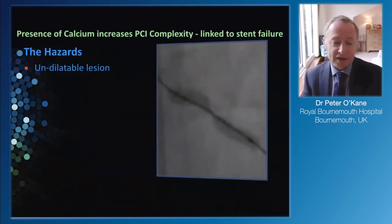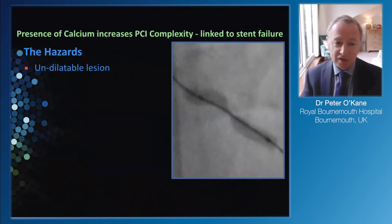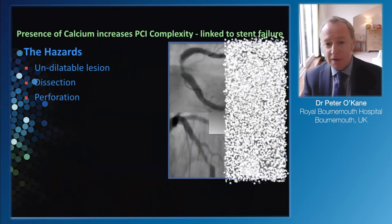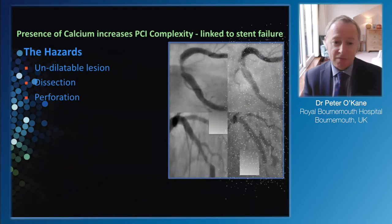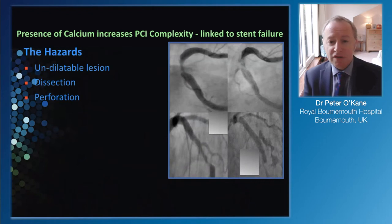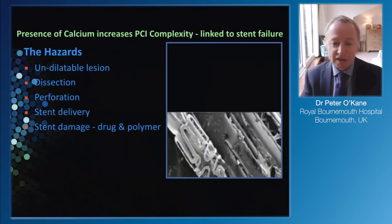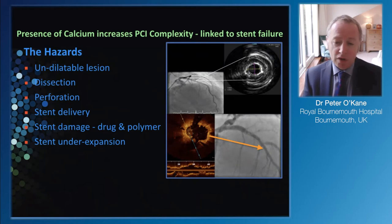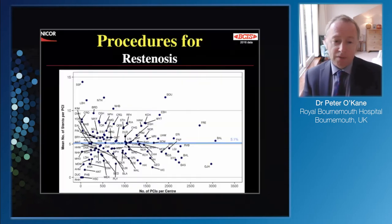Calcium is the biggest hazard we deal with. It's responsible for undilatable lesions and can be problematic peri-procedure in terms of wire or vessel perforation. When we try to deliver a stent through calcification we might damage the stent, and the polymer and drug may also be damaged without us even seeing it. Under-expansion is the worst case scenario.